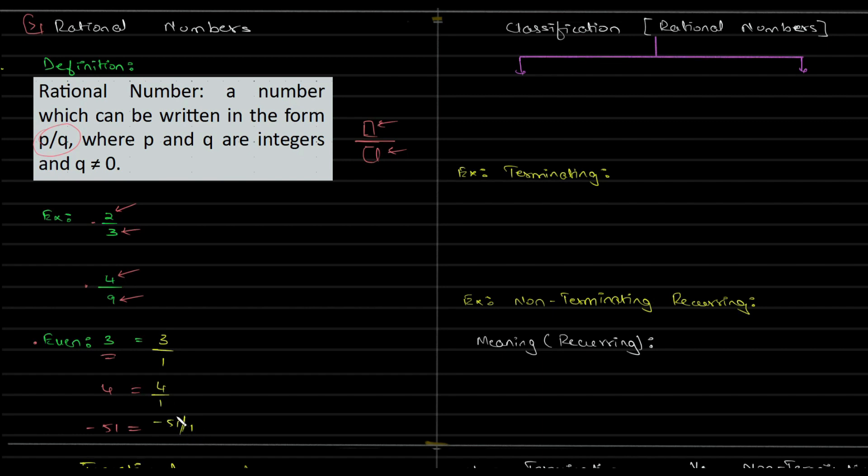So even positive integers, negative integers, and 0 are rational numbers because 0 can be written as 0 divided by 1 or 100, whatever you want it to be. All of these are your rational numbers.